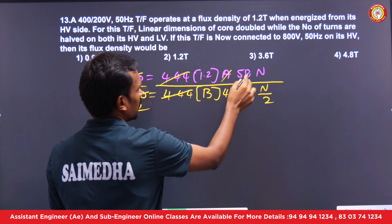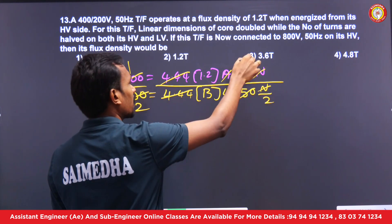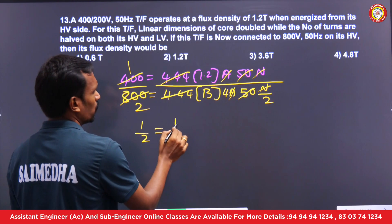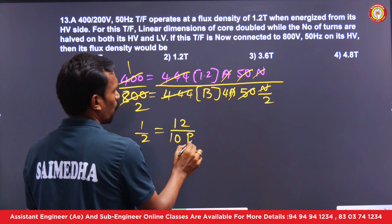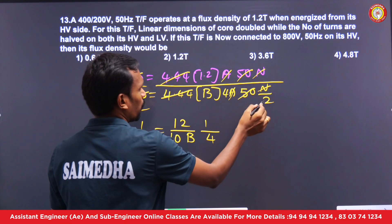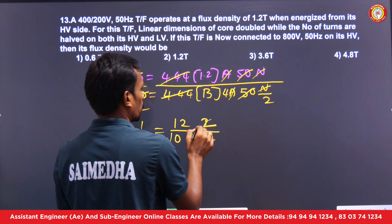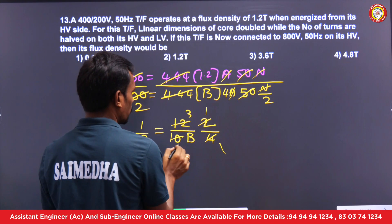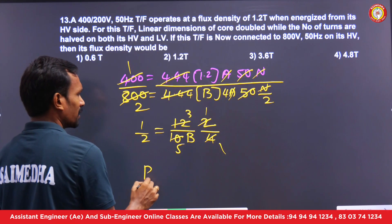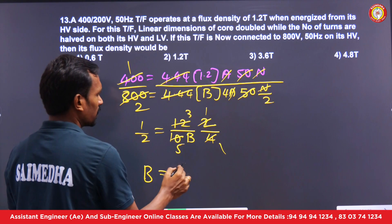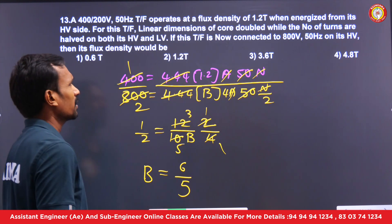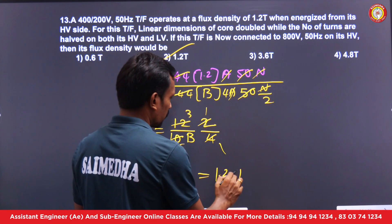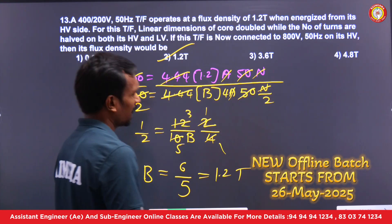Let's calculate: cancellations occur throughout the expression. This 2 comes here, another 2 comes here. So the answer is 1/2 × 1.2 × (1/4) × 2 × 4 simplifies. The flux density B equals 6/5, which equals 1.2 Tesla. The flux density remains 1.2 Tesla.